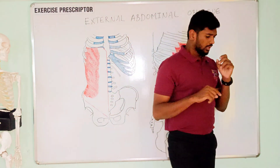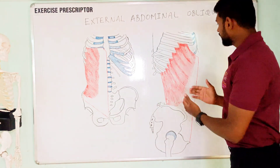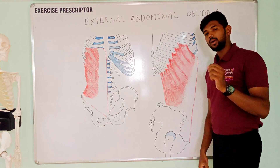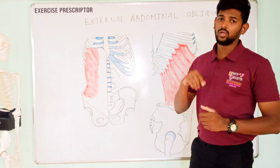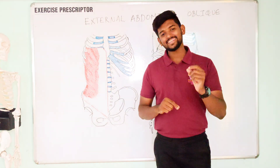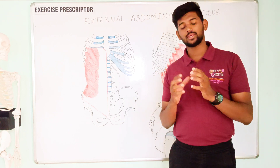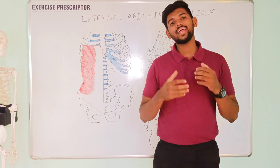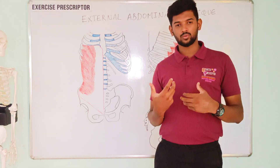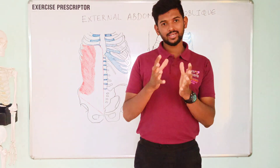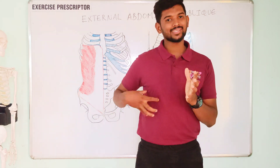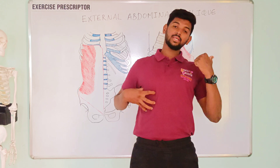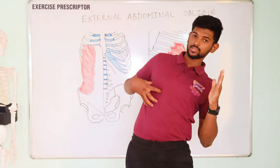Additionally, it produces the movement of compressing the ribs downward and compressing the abdominal cavity. The eccentric action of the external abdominal oblique is the exact opposite of what we have discussed. For the right side external oblique, the eccentric function produces extension, opposite side lateral flexion, and same side rotation.